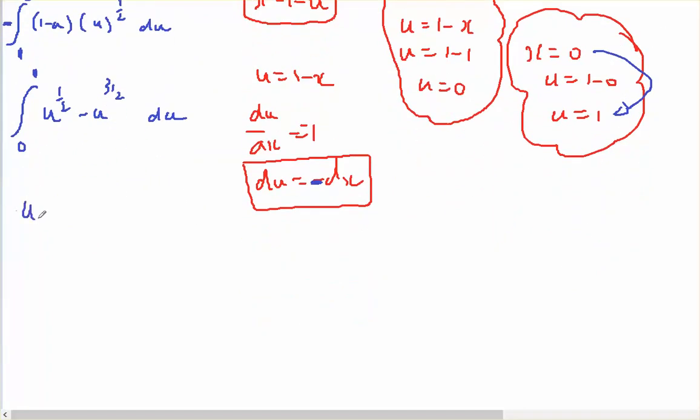Which is going to equal u to the 3 on 2 on 3 times 2 minus u to the 5 on 2 on 5 times 2, all from 0 to 1.